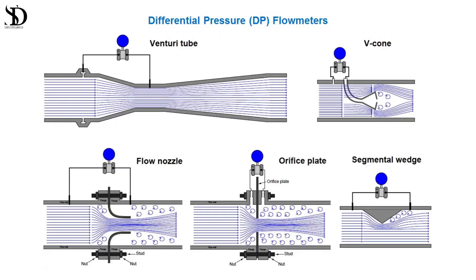Types of flow measurement. 1. Differential pressure (DP) flow meters: these measure flow rate by creating a pressure drop across a constriction in the pipe. Orifice plates, venturi tubes, and flow nozzles fall under this category.